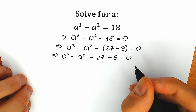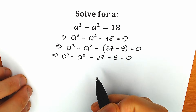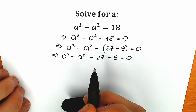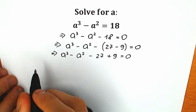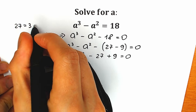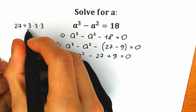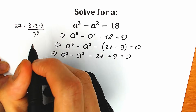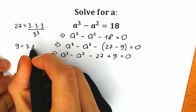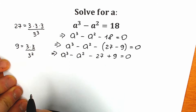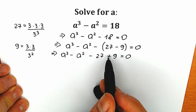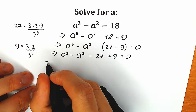Right now, why did we choose 27 and 9? Because we have cube and square terms, and 27 and 9 are really great constants for us. Because 27 can be written as 3×3×3, so we can write 27 as 3³. And 9 can be written as 3×3, so we can write 9 as 3². So instead of 27 let's write 3³, and instead of 9 let's write 3².